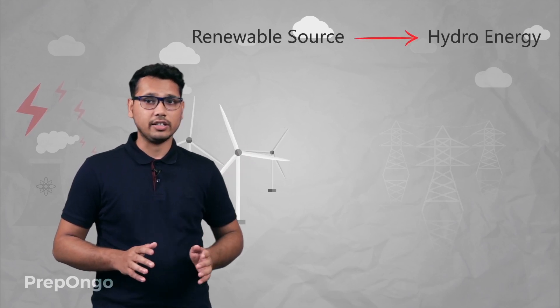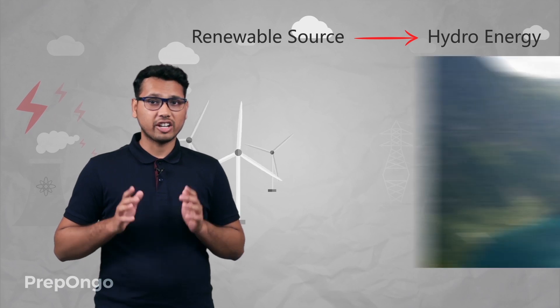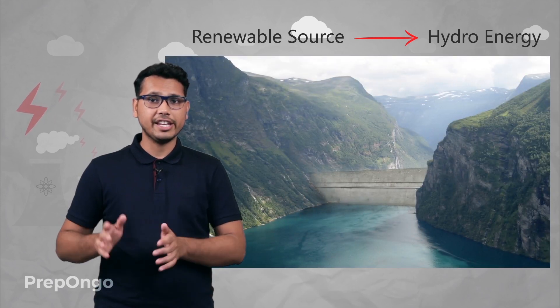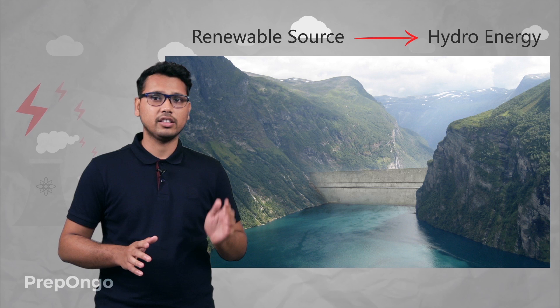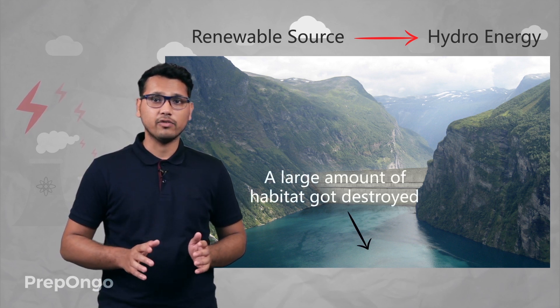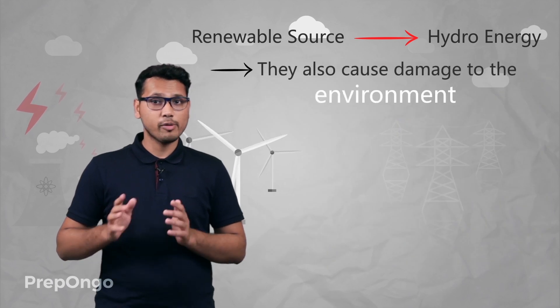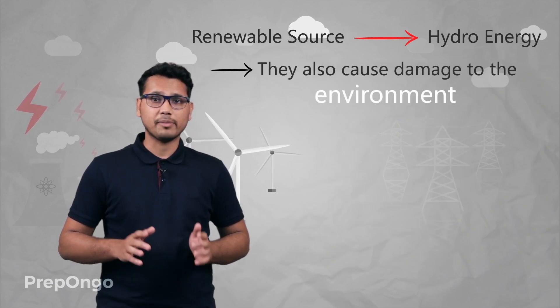It is not that only non-renewable sources cause damage to the environment. If we take the example of a renewable source of energy like hydro energy, during the formation of the reservoir a large area of land got submerged and a large amount of natural habitat was destroyed. So even renewable sources also cause damage to the environment.